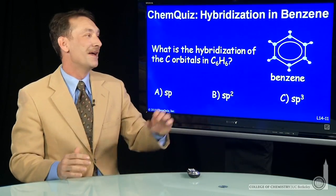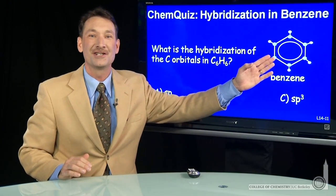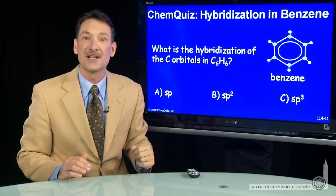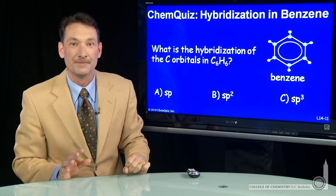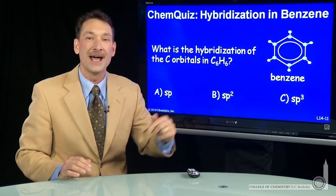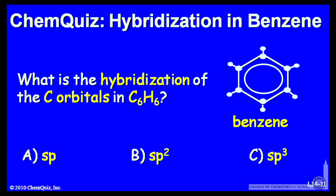Let's look at hybridization in benzene. Benzene, C6H6, I've drawn it like this with this circle representing the alternating double bonds. Can you tell me if the carbons are sp, sp2, or sp3 hybridized? Think about that for a minute and make a selection.